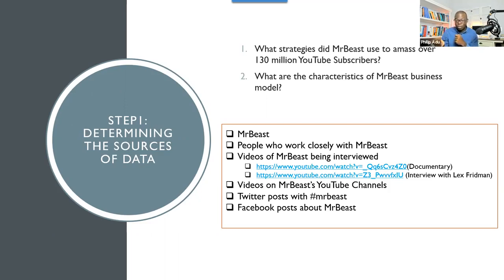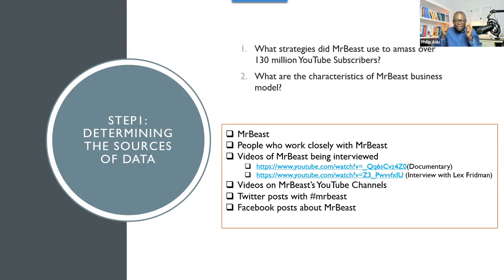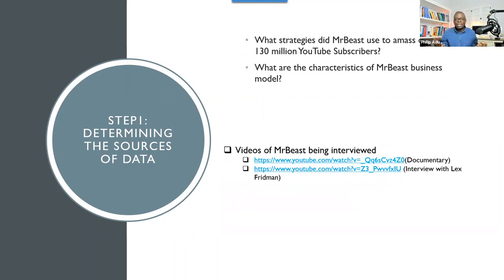What about videos? You can go to YouTube — he has been interviewed by a lot of people. So you can get access to those videos and analyze them. You can go to his channel and look at some of the videos and see which one will be best for you to analyze. You can also go to Twitter and hashtag Mr. Beast, or go to Facebook. These are all ways of getting access to information to address your research questions. Based on my time and resources, if I am doing this research, I will look at the interviews — he has done a lot of interviews that have been recorded and you can go to YouTube and get access to those.